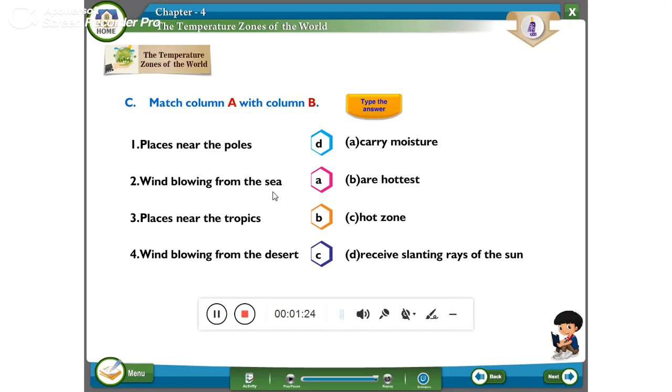So, first one. First what is the first answer? Places near the poles. What we call that? Receive slanting rays of the sun.